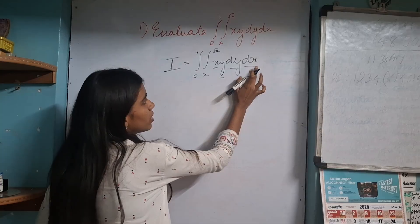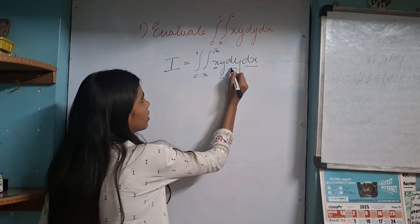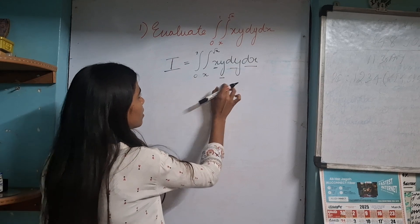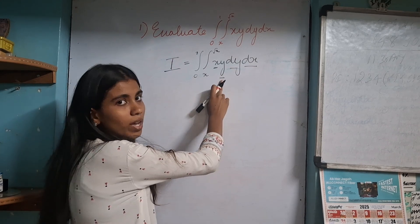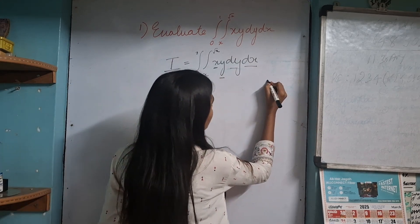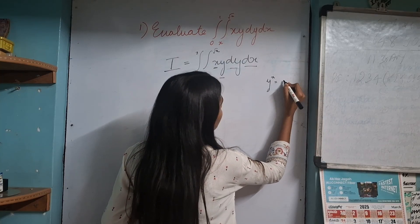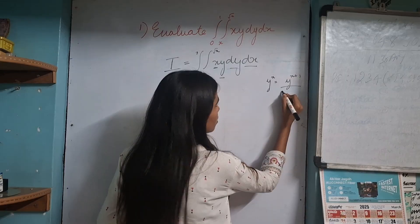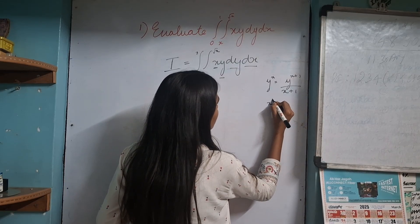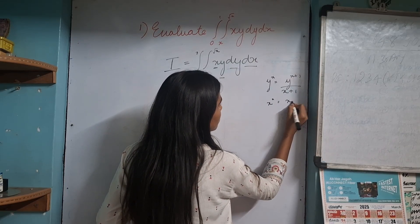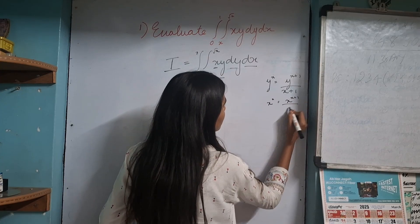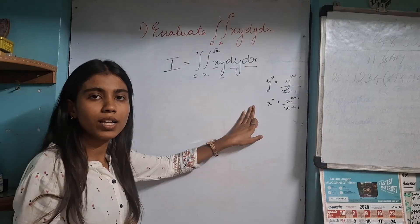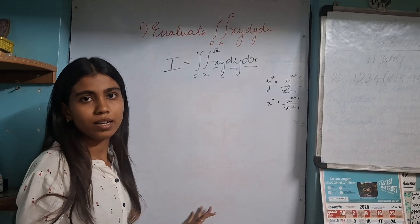So: dy means integrate y, dx means integrate x. In this question, we have dy given, so you have to start by integrating y. Now you may ask how to integrate. We have a list of formulas provided. Here I will mention only two formulas which we are going to use in this entire video. These are the two formulas I am going to use throughout.